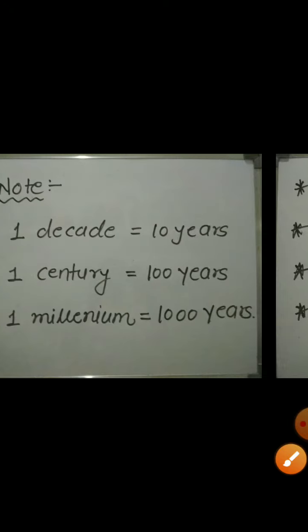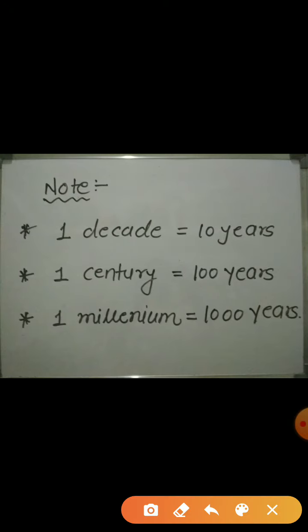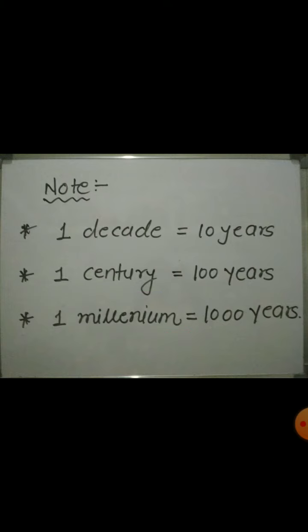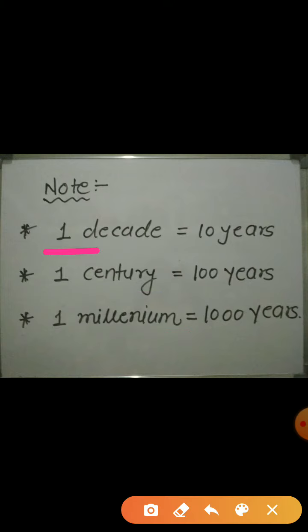When we go ahead after years, we have time in decade, century, and millennium as well. 1 decade is equal to 10 years, 1 century means 100 years, and 1 millennium means 1000 years.